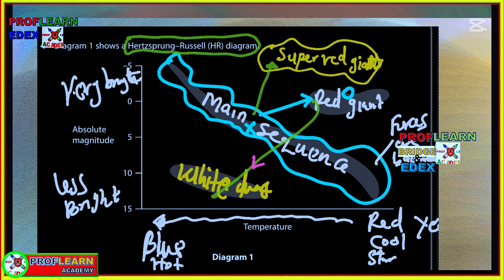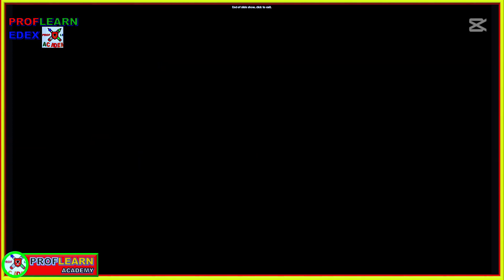Magnitude tells us the brightness. We shall have less bright stars down here and very bright stars up here. If we are talking about a star in this region, this star will be a star which is cool because it's on the red part, but it's a bright star because it's on the upper part of the absolute magnitude. That's something you need to understand as far as the HR diagram is concerned. Also you need to understand what we mean by absolute magnitude and apparent magnitude.